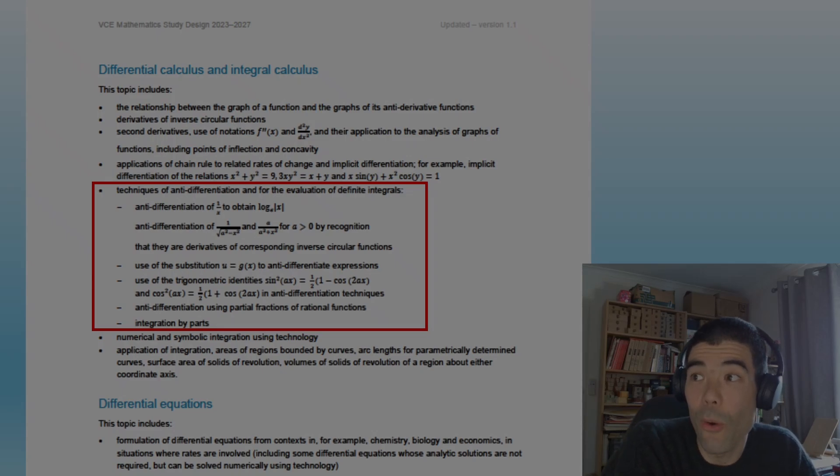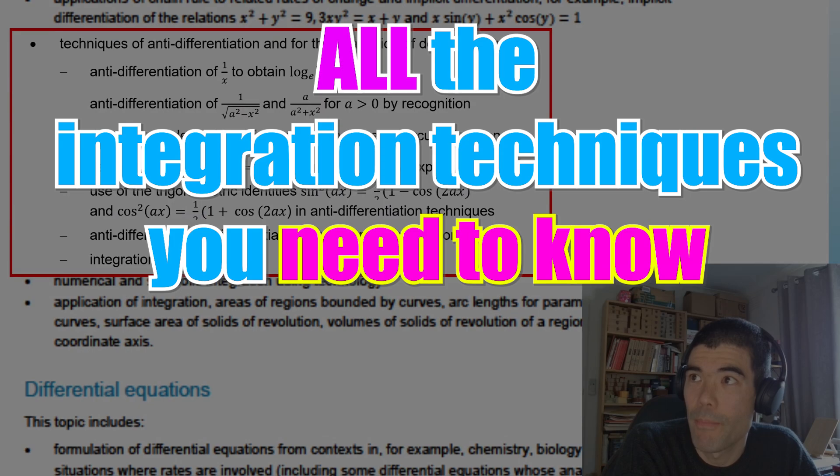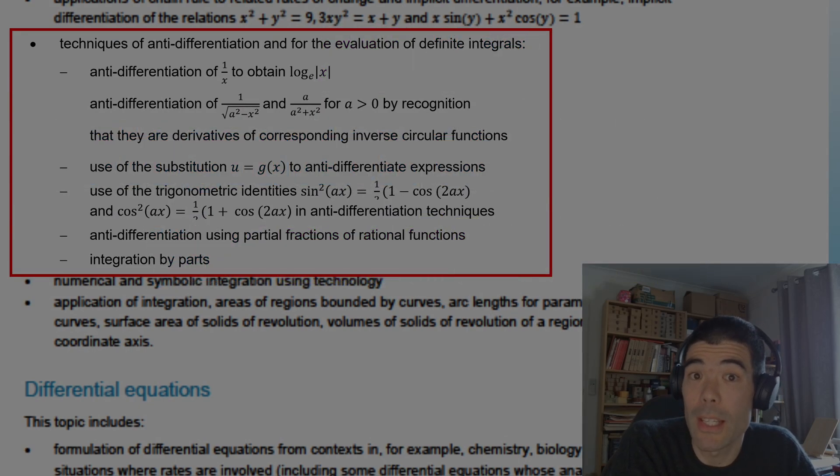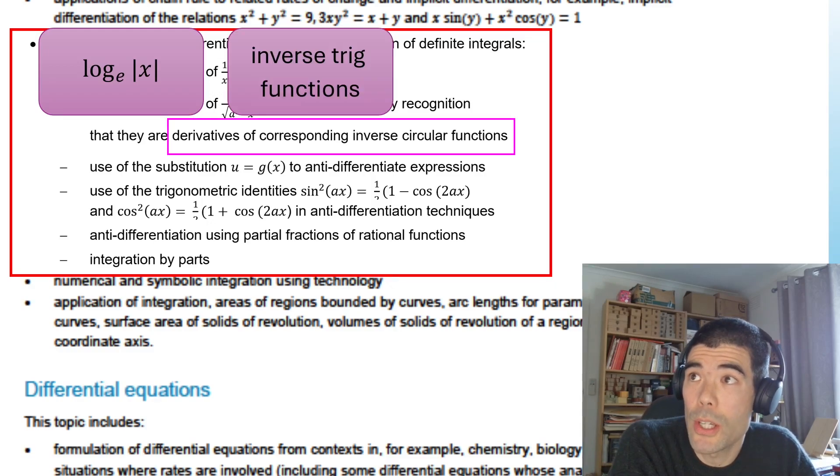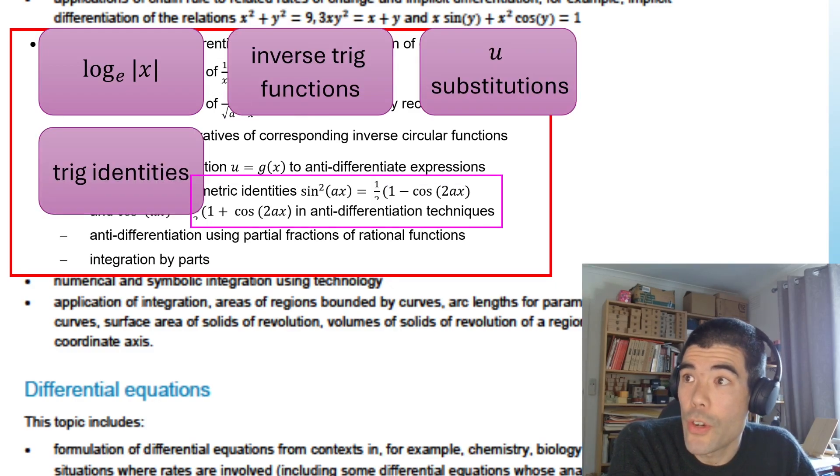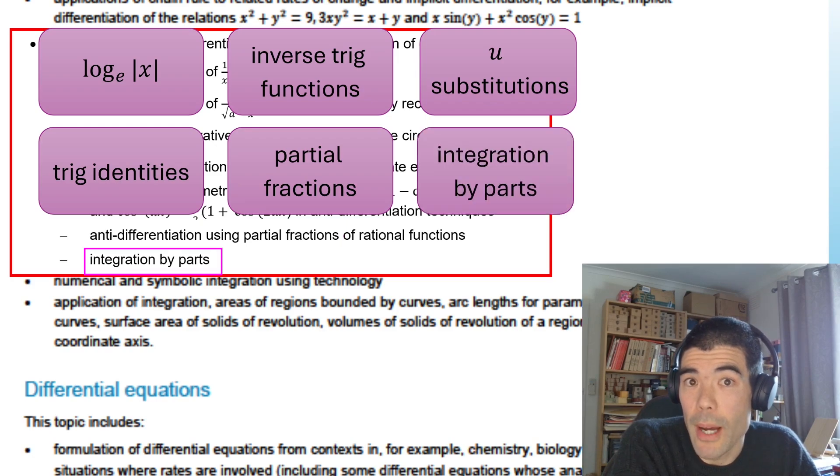All right, so we're going to look at all the integration techniques you need to know for VCA specialist maths. There's only actually six mentioned in the study design: integrating 1 over x to get log x with the modulus, using the inverse circular or inverse trig functions, the u substitutions, the trig identities, in particular these double angle formulas for sine squared and cosine squared, partial fractions, and integration by parts. So obviously there's some subtypes within each of those broad categories. We'll look at a simple example for each type in this video.